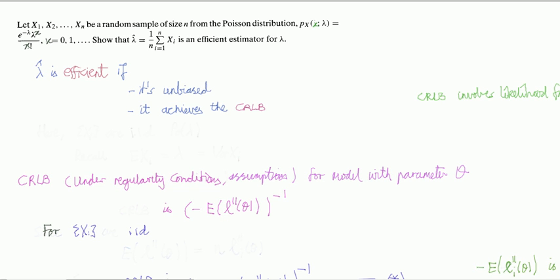Let's look at this question. We've got a sequence of random variables from the Poisson distribution. Show that lambda hat, the sample mean of X, is an efficient estimator for lambda. What do we mean by efficient? This lambda hat is efficient if two things are satisfied: it's unbiased, and it achieves this thing called the Cramér-Rao lower bound. We're going to assume we can show it's unbiased, so we're just going to focus today on looking at the Cramér-Rao lower bound.